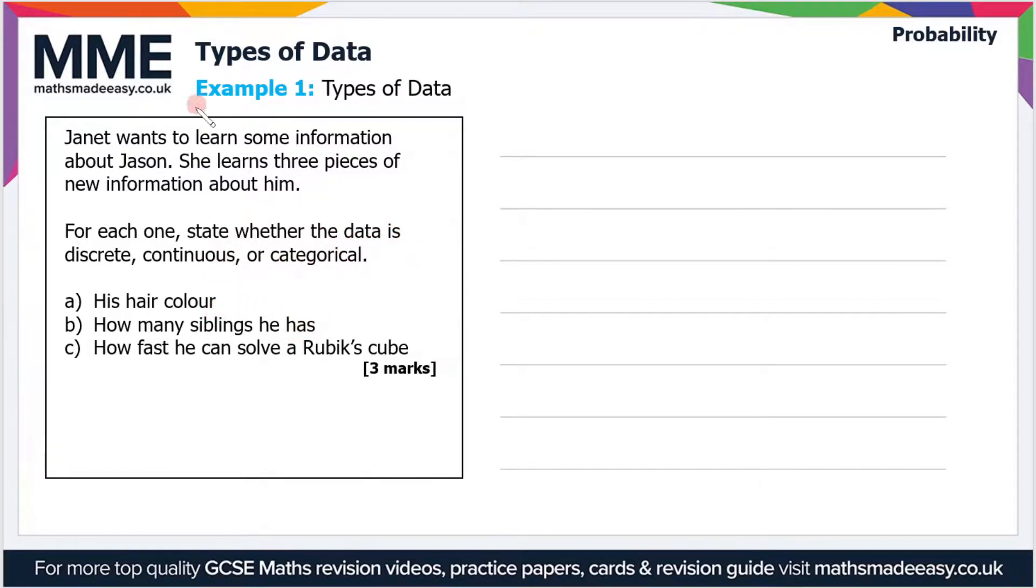So the first bit is his hair color. His hair color is qualitative data, so it's worded data, otherwise known as categorical. So we can say that's categorical data.